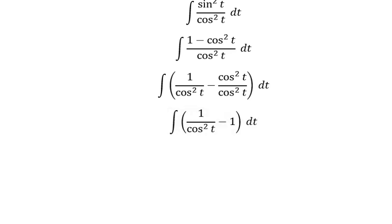Taking the integral, the integral of 1 over cosine squared t gives tangent t, and the integral of 1 gives t.